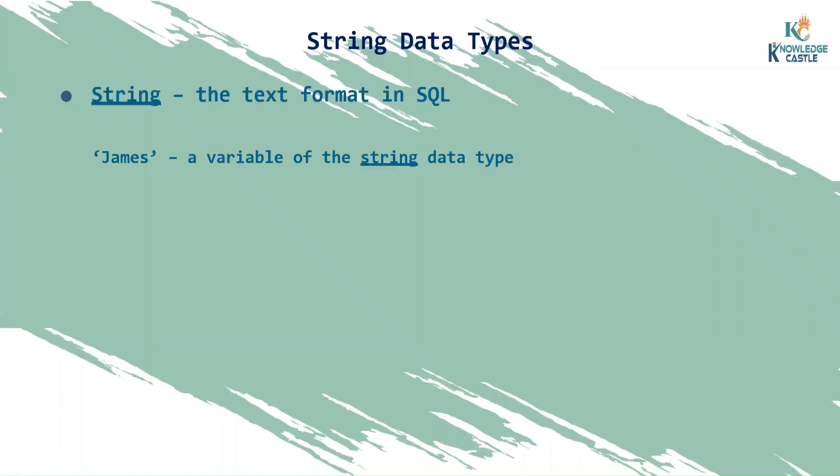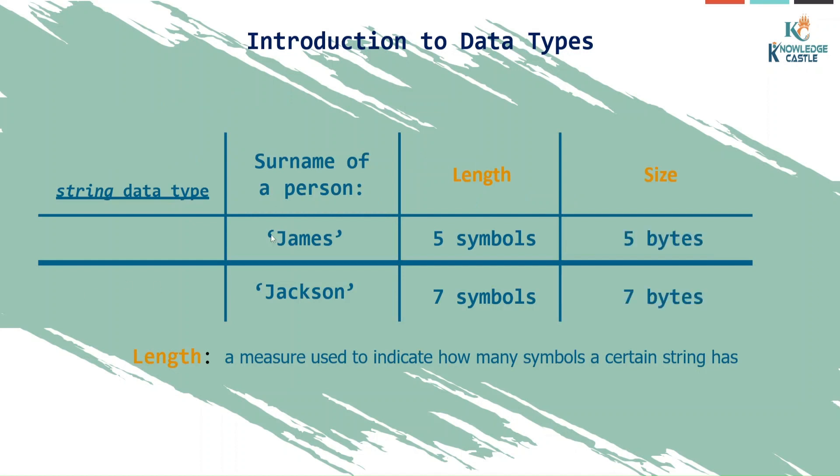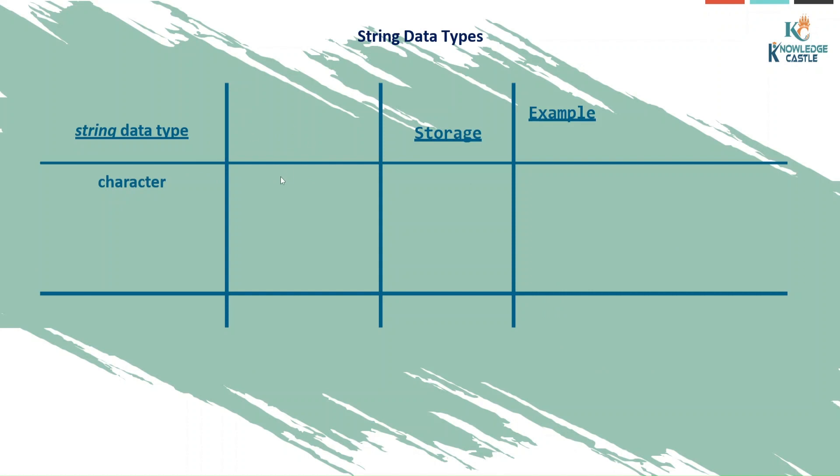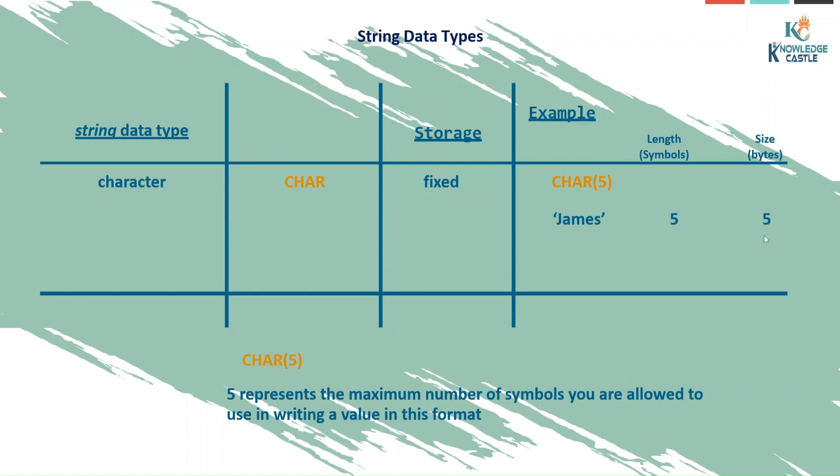How many data types can we have in string or characters? The first one is character. How do we write that in SQL? CHAR. Character. Whenever you write character, you have to specify how much storage you want to take. The storage is fixed. For example, character five. What does this mean? This means that if I'm trying to write a word which is more than five bytes, it will not allow me. Five represents the maximum number of symbols you are allowed to use in writing a value in this format. James, will it go in that data type? Yes. And it is going to take how much size? Five bytes.